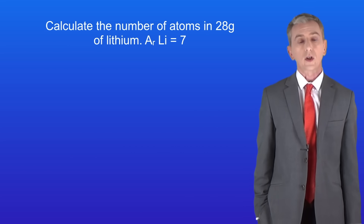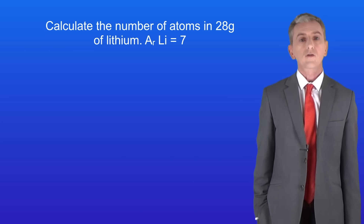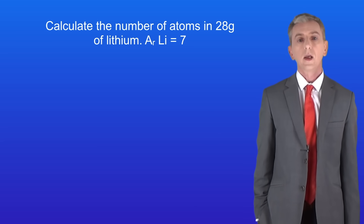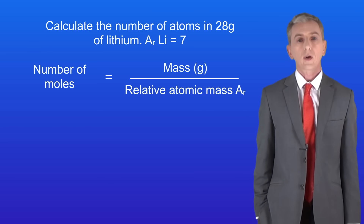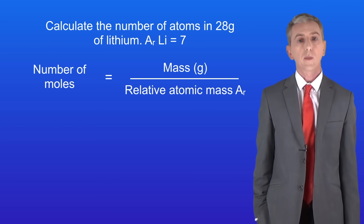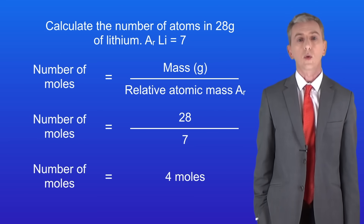Here's one for you: calculate the number of atoms in 28 grams of lithium, and the relative atomic mass of lithium is 7. Pause the video and try this for yourself. Okay, so first we need to calculate the number of moles of lithium. 28 divided by 7 tells us that we've got four moles.